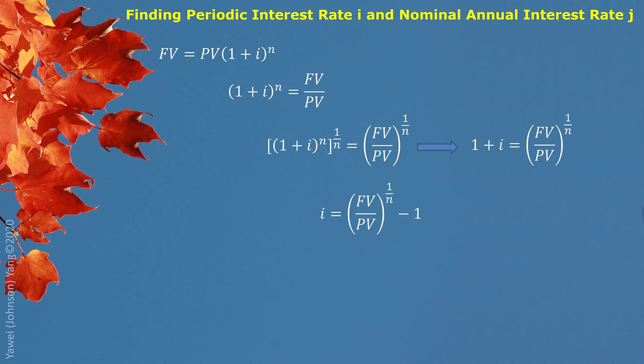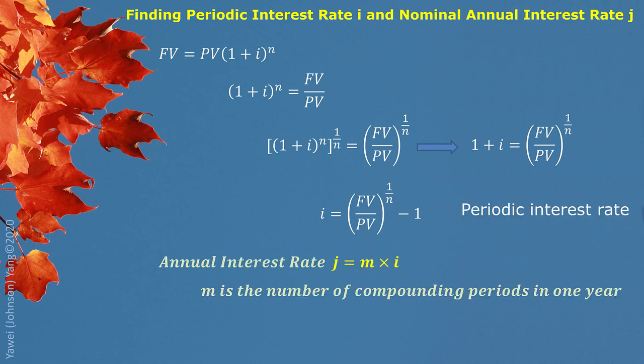This is periodic interest rate. We are normally looking for annual nominal interest rate. So we do have to do one more step. Multiply the number of compounding period per year, m.